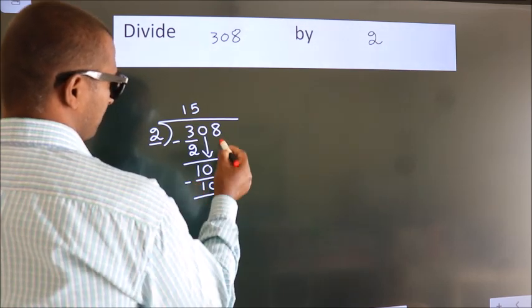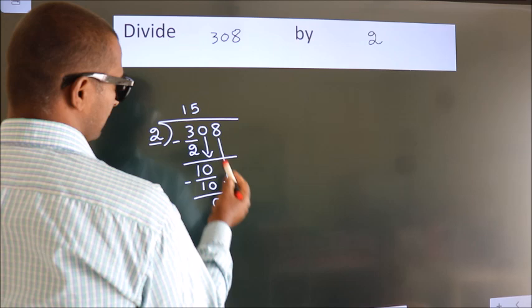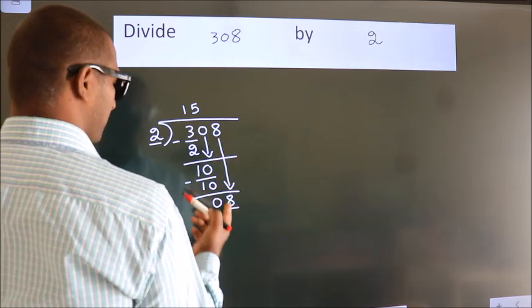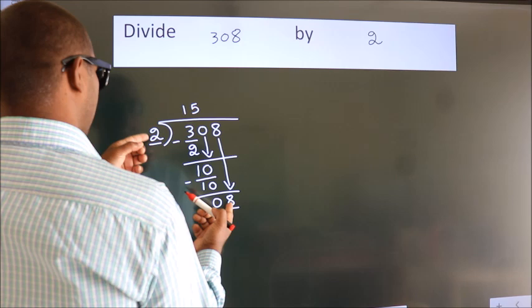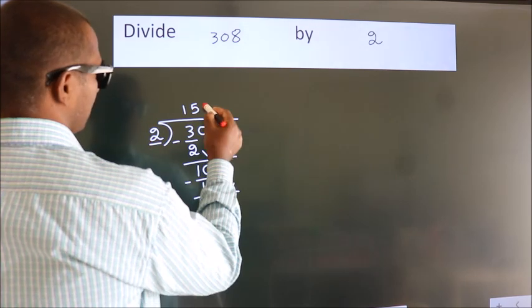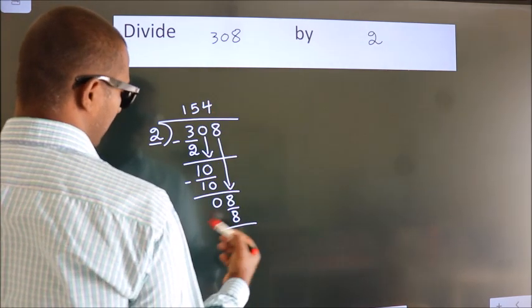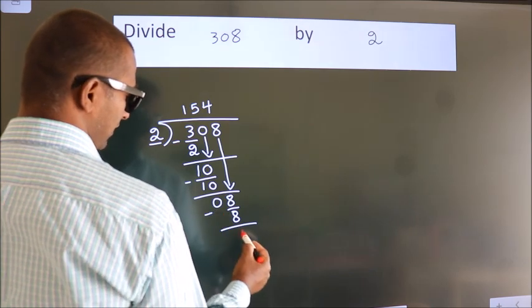After this, bring down the beside number. So, 8 down. So, 8. When do we get 8? In the 2 table, 2 fours 8. Now we subtract. We get 0.